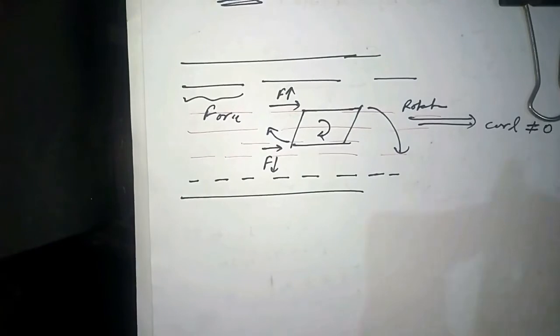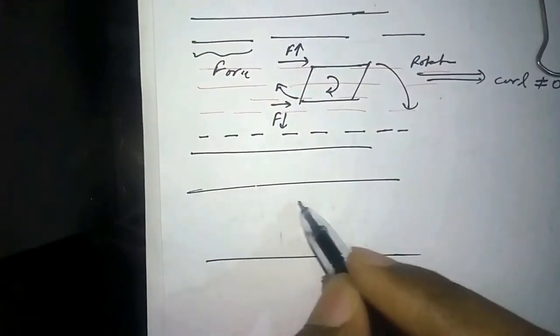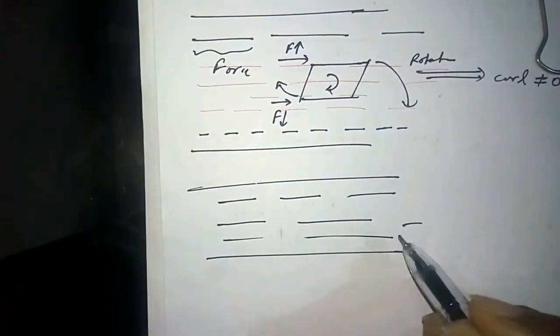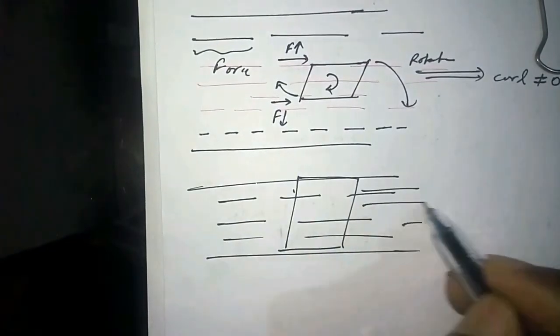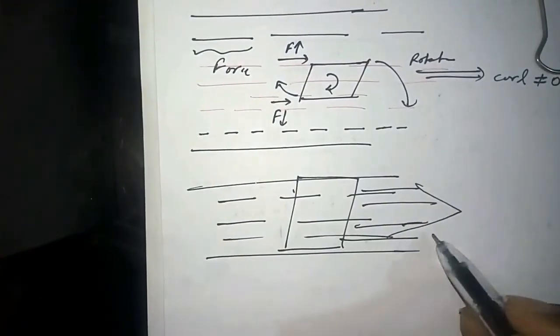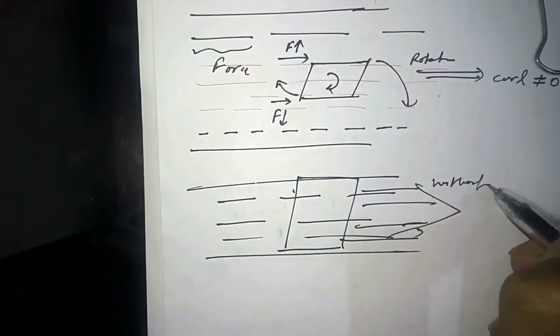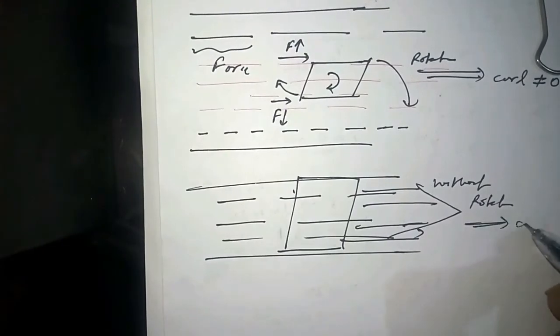Let's say we have a flow with the same force, a constant flow. Then we will take a surface like this, and if it is moving constantly without rotating, then curl is equal to zero.